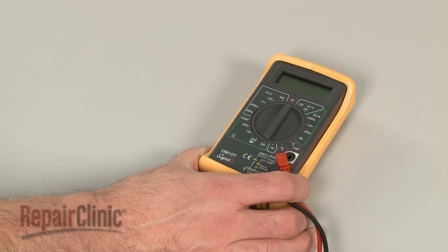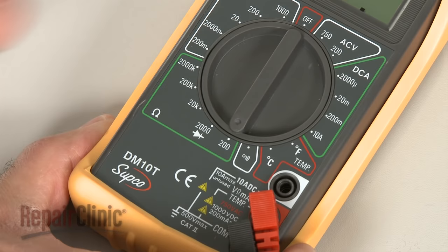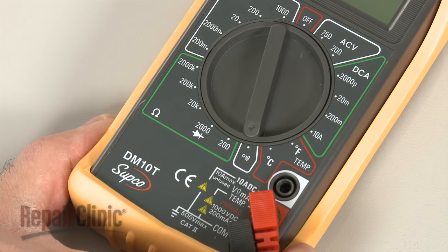When using a digital model, again rotate the dial to the lowest setting for ohms of resistance, or resistance with tone if your meter has this option.